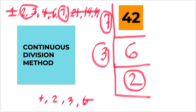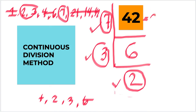So the prime factors of 42 are 2, 3, and 7. We can write it as 2 times 3 times 7. I hope you learned something today and keep on watching this video to master the concept. Have a nice day, everyone. God bless and keep safe. Thank you.